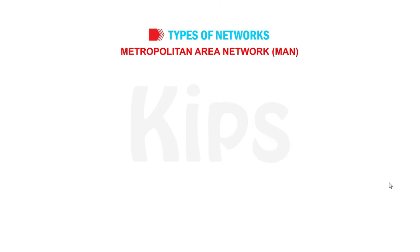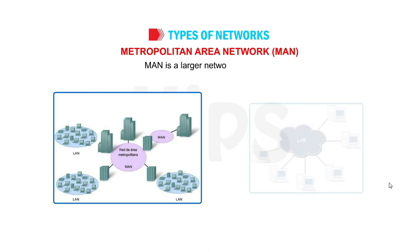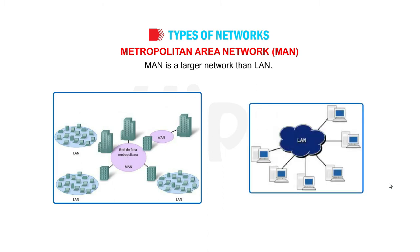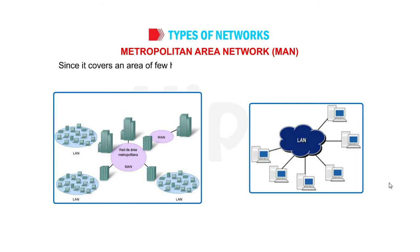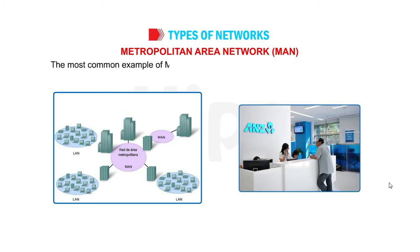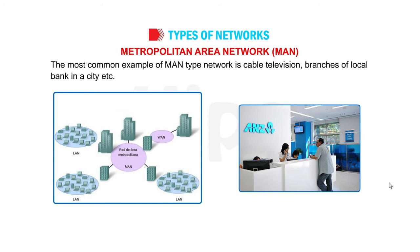Metropolitan Area Network, MAN. MAN is a larger network than LAN. It is spread across a city. Since it covers an area of a few hundred kilometers in a city, it is called Metropolitan. Common examples of MAN type networks include cable television and branches of a local bank in a city.